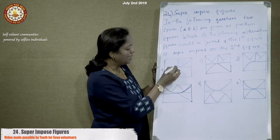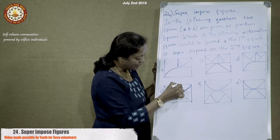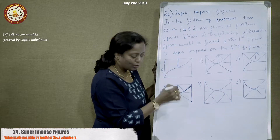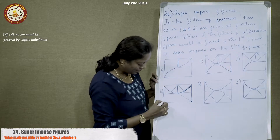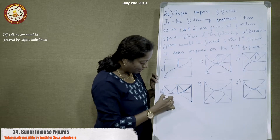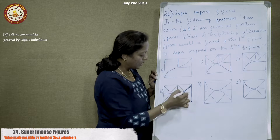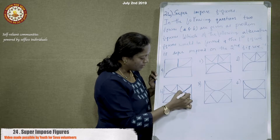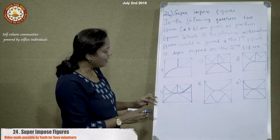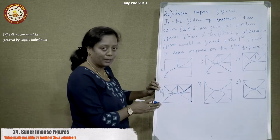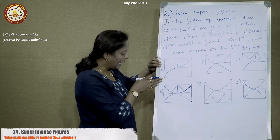There is a line here — let us draw that line. There is a curvature — let us draw that curvature. This one gets superimposed on the other, and we get a completed combined figure where picture A has been superimposed on picture B.